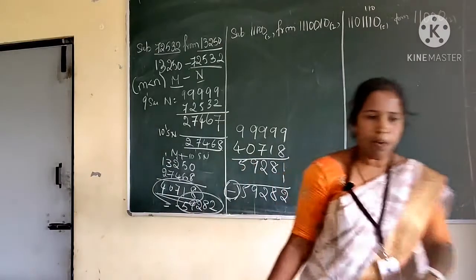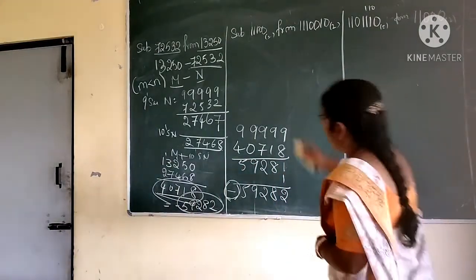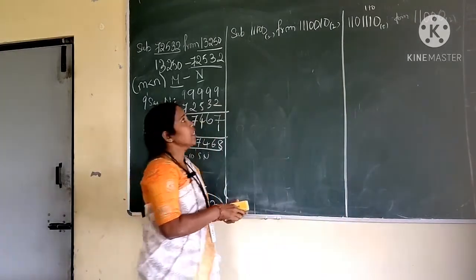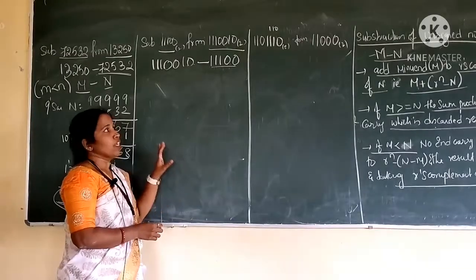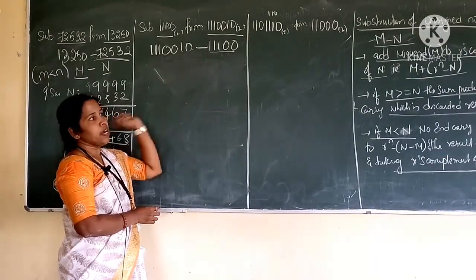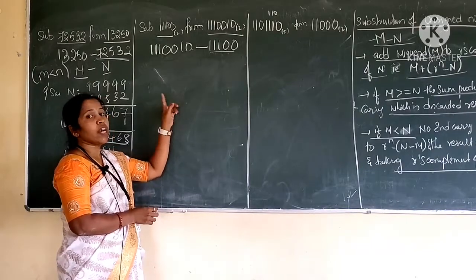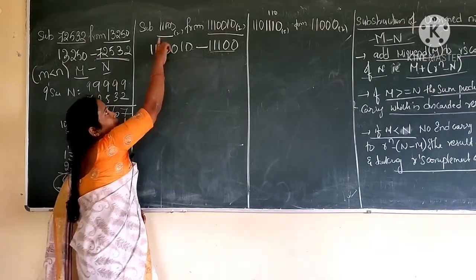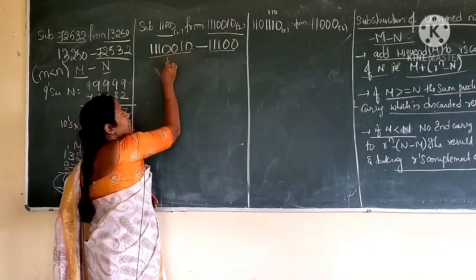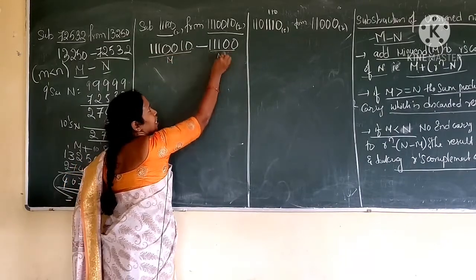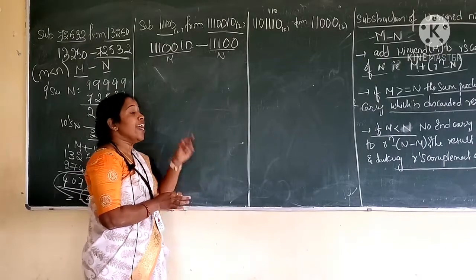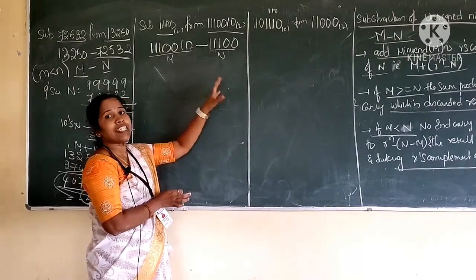Next problem we have using binary numbers. Till now what we have done — we have done using decimal numbers. Now binary numbers, same method. Here, this problem is subtraction of unsigned numbers using binary. Subtract 1110 from 1110010. 'From' means this is considered as m and this is n. When doing subtraction of binary numbers, the number of bits in both m and n should be the same.